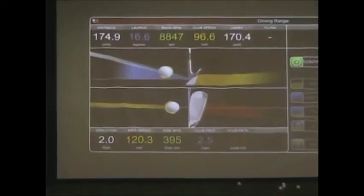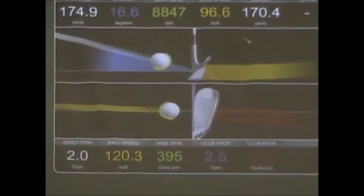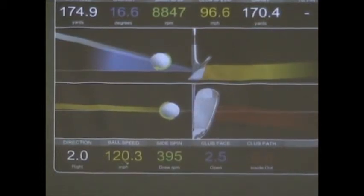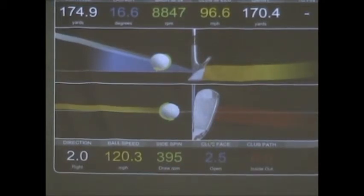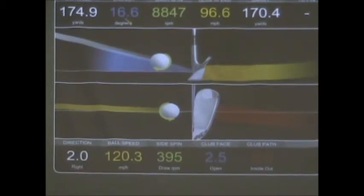That was another one up the line there — looks pretty good. I'll bring the screen up closer so you can see the numbers. This time the carry distance is a lot further and look at my ball speed, all the way up to 120 mph. Those are consequences of how I strike the ball, and I hit that one pretty solid. The launch was at 16.6 degrees and backspin at 8,800 RPM.